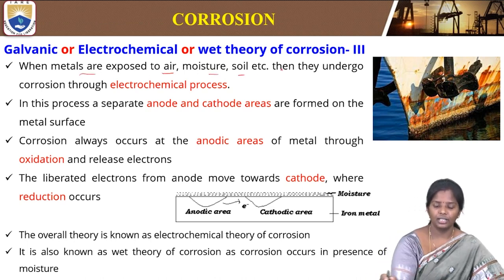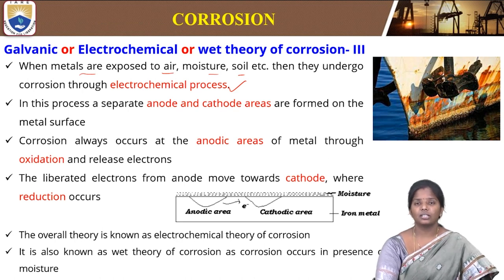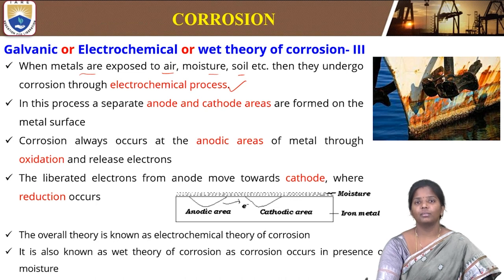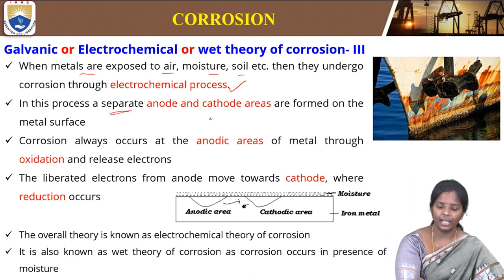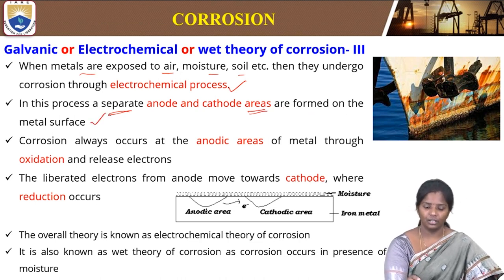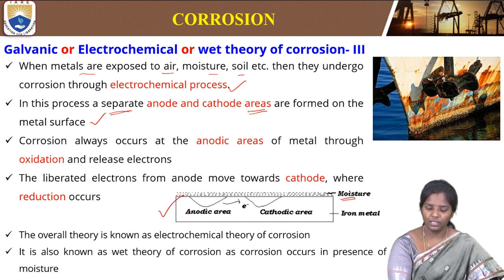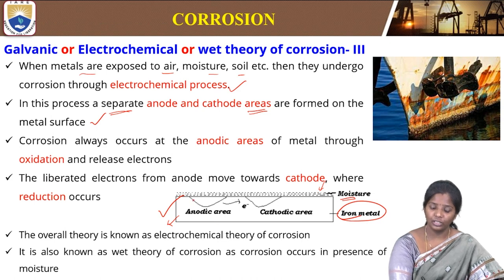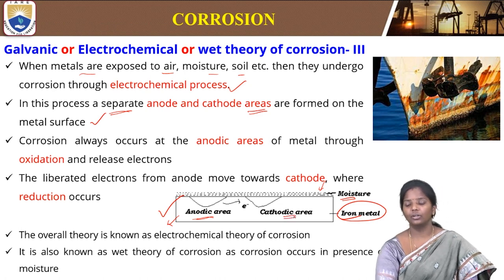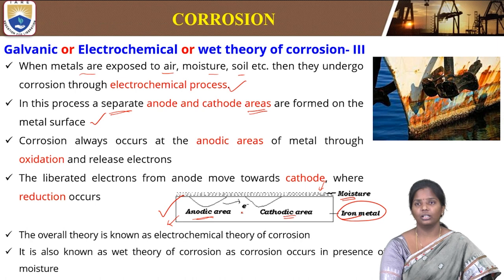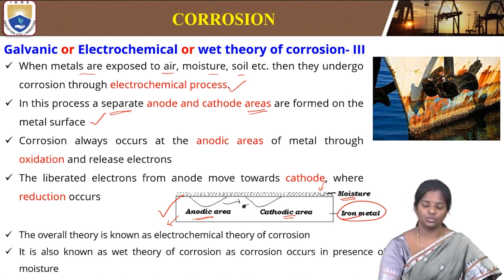Then we will jump into the galvanic or electrochemical or wet theory of corrosion. When metals are exposed to air, moisture, soil, etc., they undergo corrosion through an electrochemical process. The exposure gives some medium for the metal to react, forming anodic and cathodic areas so that electrochemical reactions — oxidation and reduction — take place. In this process, separate anode and cathode areas are formed on the metal surface.